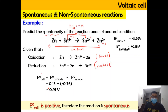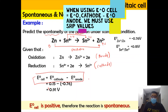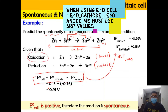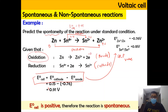An important precaution: when using this formula, make sure you use the SRP value from the table. Even though zinc undergoes oxidation, you do not change the sign of its SRP value. Logically you might think to make it +0.76, but when plugging into the equation E0 cell = delta E0 cathode − delta E0 anode, you must use the original SRP value from the reduction process, not the oxidation process.